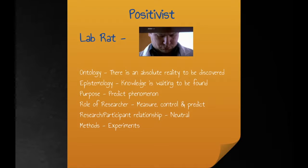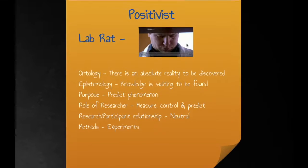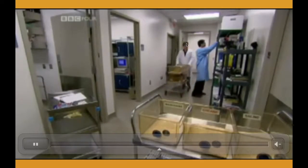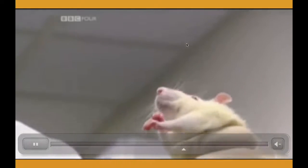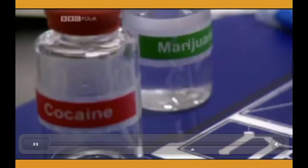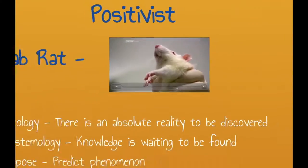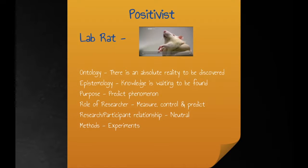First we have the positivist paradigm. The best example I could think of was the lab rat. Lab rats and rodents are often used in quantitative experiments because they are subjects that are easy to control, cheap, and genetically similar. Inbreeding can allow for creating similar genetic test subjects, and by minimizing genetic differences, scientists are able to neutralize variables that could impact interpretation of outcomes. Similarly, the positivist approach attempts to control as many variables as possible in order to prove or achieve a particular outcome.